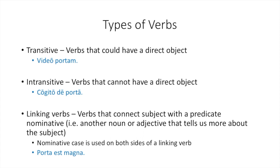There are transitive verbs — verbs that could have a direct object — like video portam, meaning I see the gate. What do I see? I see a gate. There's a direct object for your verb to see, video. Then there are also intransitive verbs, verbs that cannot have a direct object. We've seen cogito, cogitare, meaning to think or to ponder. If it's being used as to think, it cannot have a direct object: cogito de porta, I'm thinking about the gate.